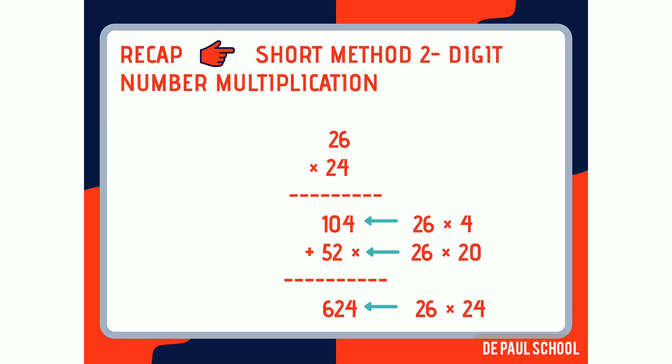Let me give you another example. The example given is 26 multiplied by 24. Here 26 is the multiplicand — which can also be written as 20 plus 6 — and 24 is the multiplier, which can be written as 20 plus 4. First, 26 is multiplied by 4, giving an answer of 104. As explained earlier, we then put a zero below the last digit to hold the ones place.